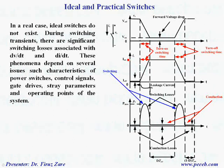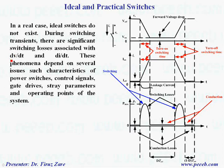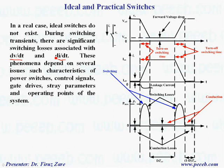In a real case, ideal switches do not exist. During switching transients, there are significant switching losses associated with dv/dt and di/dt. These phenomena depend on several issues such as characteristics of power switches, control signals, gate drives, stray parameters, and operating points of the system.